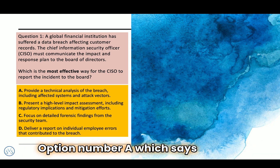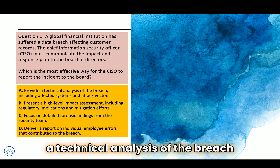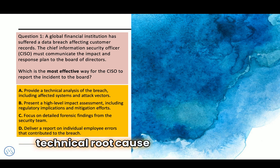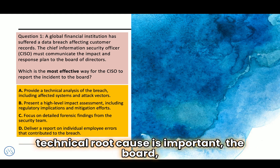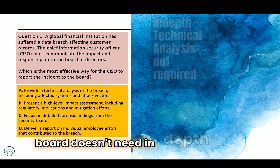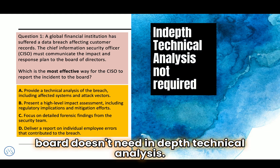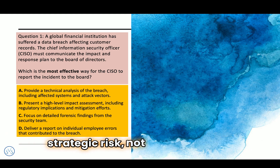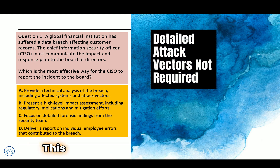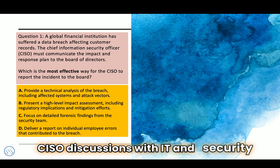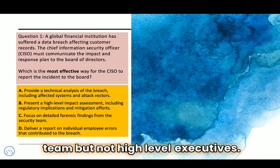Option A says provide a technical analysis of the breach including affected systems and attack vectors. While understanding the technical root cause is important, the board which the CISO is reporting to doesn't need in-depth technical analysis. The board focuses on financial, legal, and strategic risk — not detailed attack vectors. This information is better suited for CISO discussions with the IT and security team, not high-level executives.